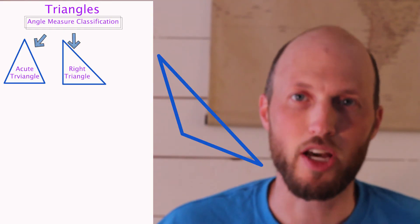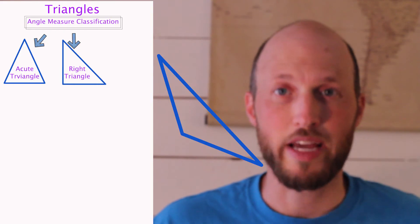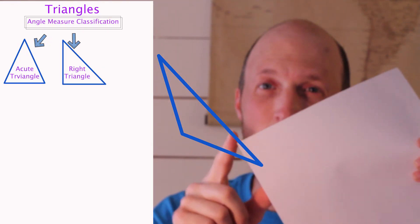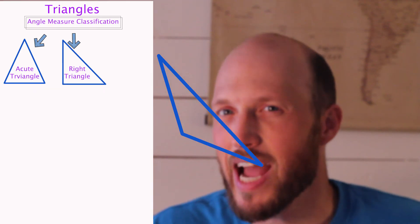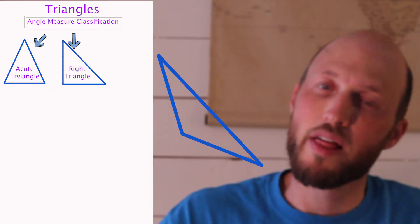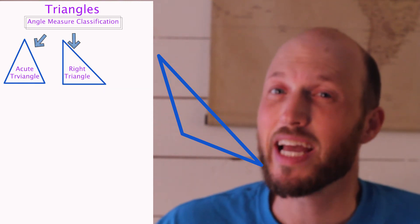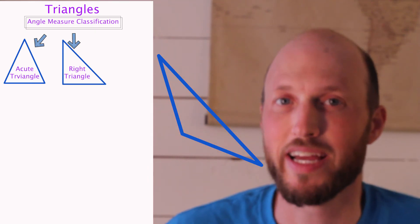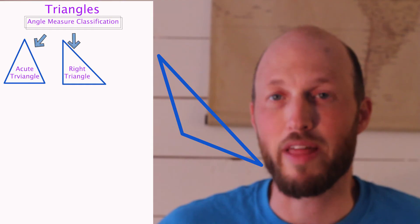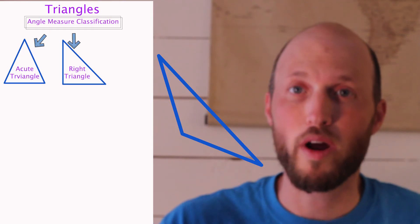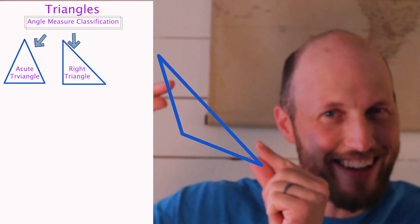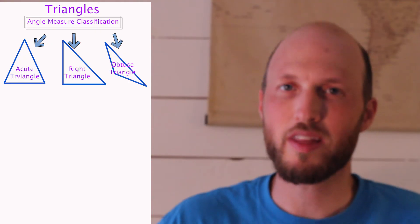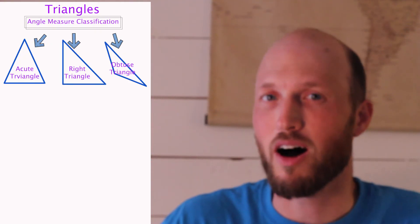Next we have the obtuse triangle. Take your piece of paper again — 90 degrees — and put it into that one angle. If it is more than 90 degrees, even if it is 91 degrees or 90 and one-tenth degrees, that is more than 90 degrees, which makes it an obtuse triangle. The other two angles are going to be acute. That is how we classify triangles based on angle measurements.